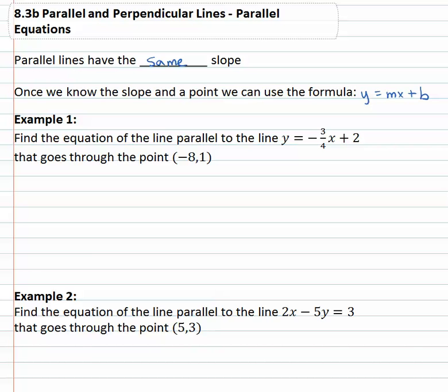Well if parallel lines have the same slope, we need to find the slope of our parallel equation. If we think about y equals mx plus b, we can quickly identify m the slope is negative three-fourths.